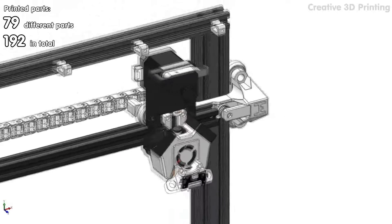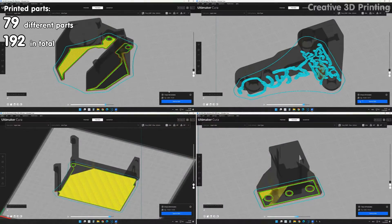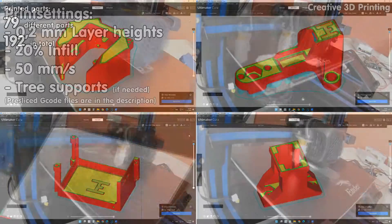All 192 parts were sliced using Cura and I used these settings to print them.